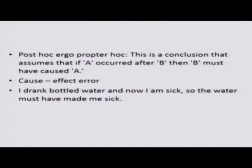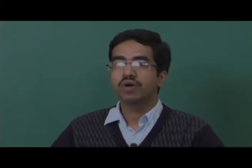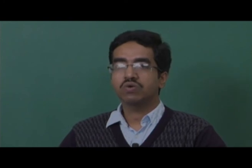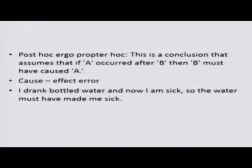The next fallacy is post hoc ergo propter hoc — assuming that if A occurred after B, then B must have caused A. For example: I drank bottled water and now I am sick, so the water must have made me sick. But you may have drunk contaminated water two days earlier or caught a disease in a public place. You focus only on the immediately preceding event and blame that factor, ignoring other possible causes.